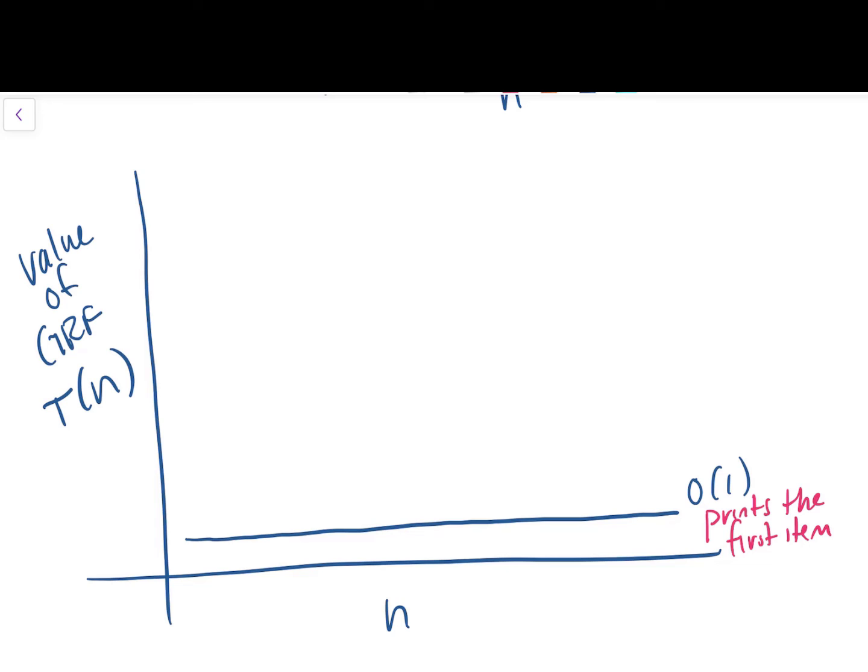So let's make a really big chart here. On the x-axis will be n, which we know is the size of our algorithm's input. And on the y-axis, we'll have the value of our growth rate function, T. So let's draw a flat line here, a horizontal line. This line represents algorithms with constant time complexity, big O of 1. An example would be an algorithm that accepts an array, and no matter how big the array is, it always prints the first item.